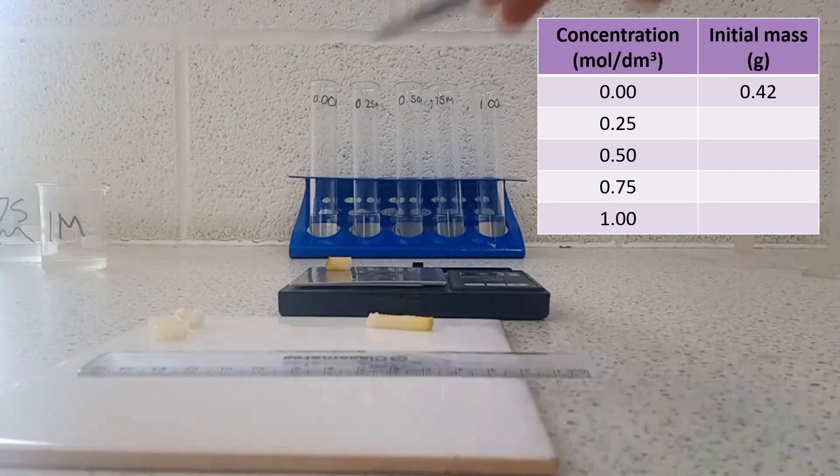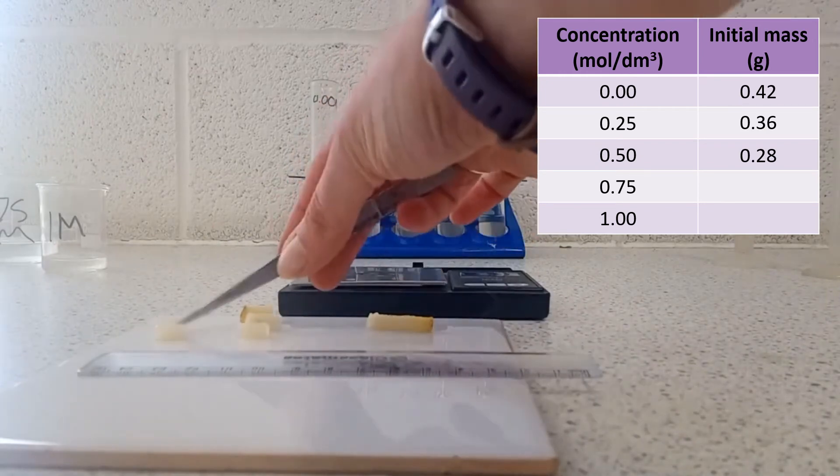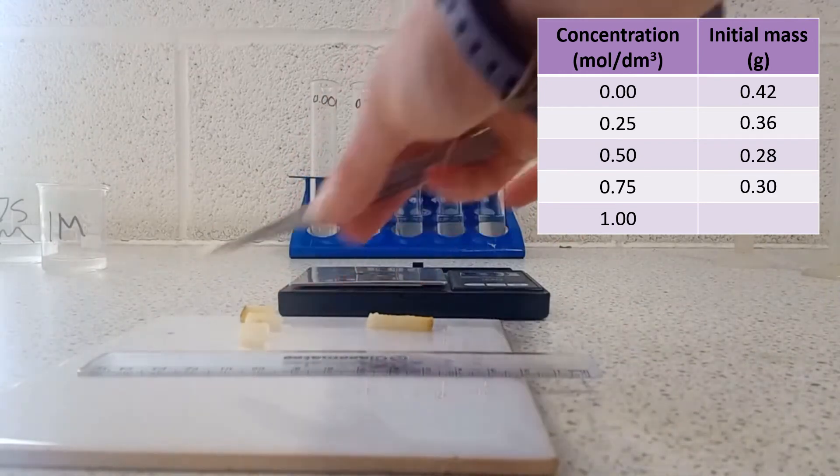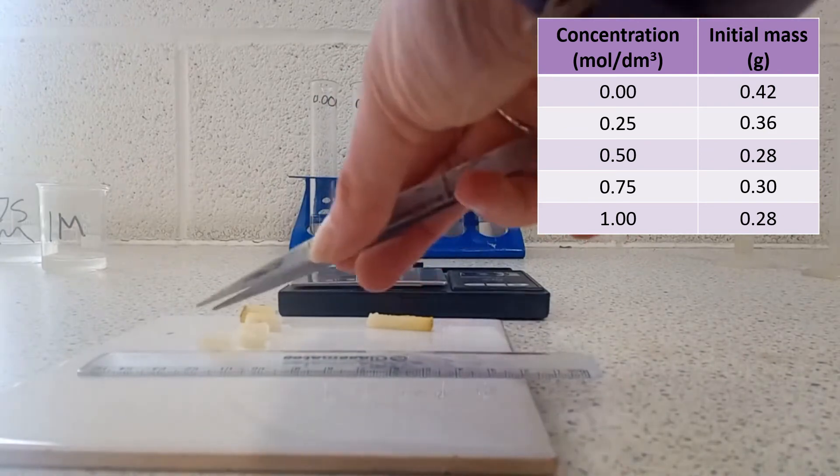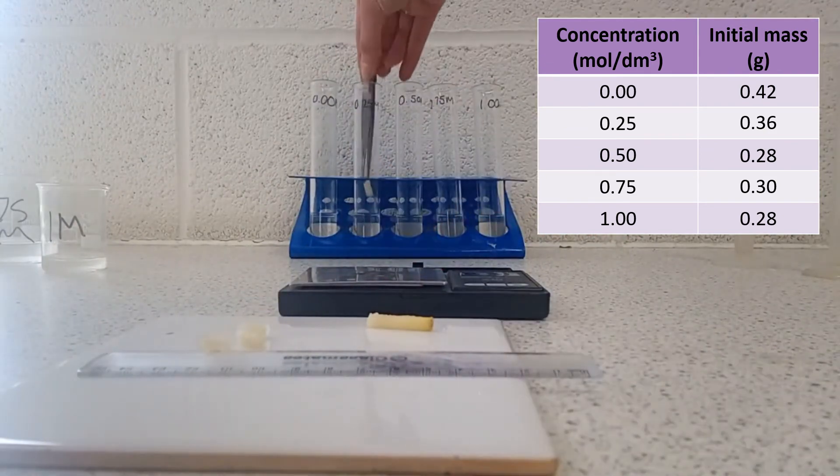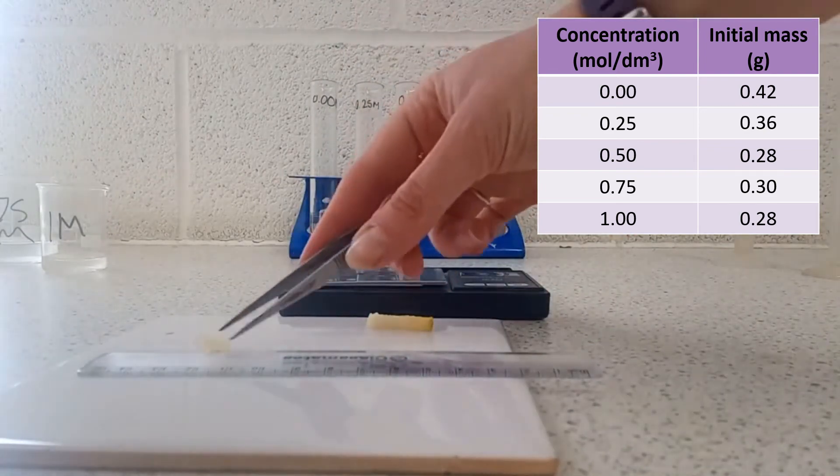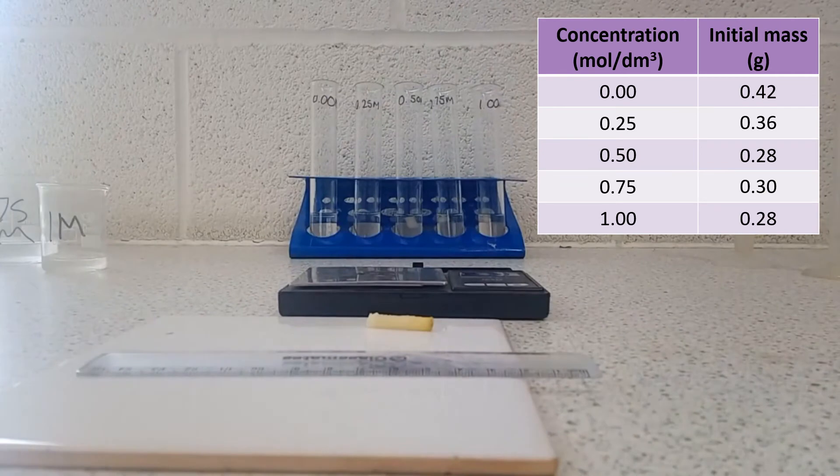So my first piece has a mass of 0.42 grams, then 0.36, 0.28, 0.30, and finally 0.28. So each of those pieces is now being put into an individual tube with a solution of a different concentration, and those are going to be left for the same period of time.